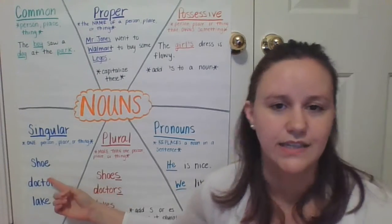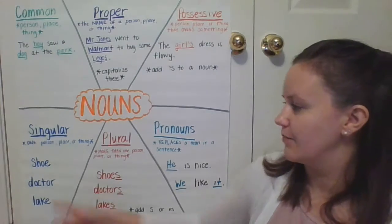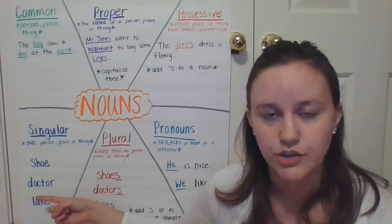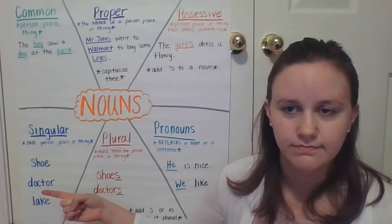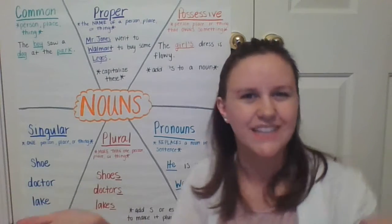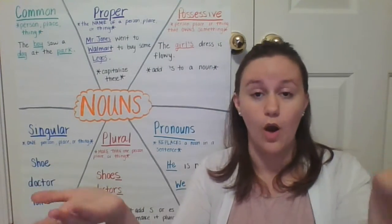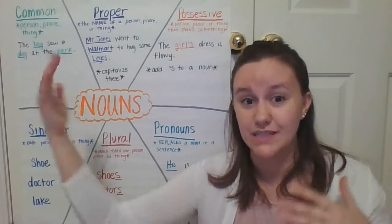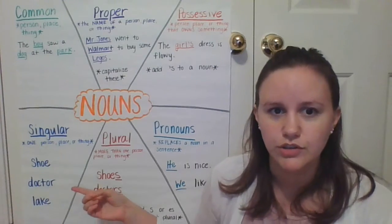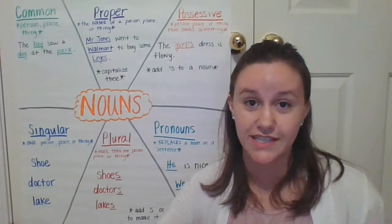What that means is, if I'm writing a sentence about a shoe, a doctor, or a lake, let's say I'm going to write a sentence about a doctor, I can't say the doctor walk to the store. The doctor walk. That doesn't make sense. I could say the doctor walks or the doctor walked. That means my noun and my verb agree. It makes sense. I couldn't say the doctor skip.